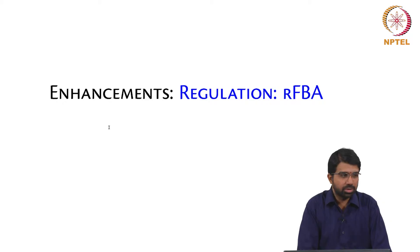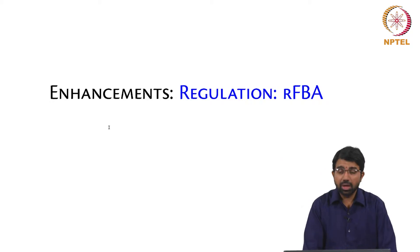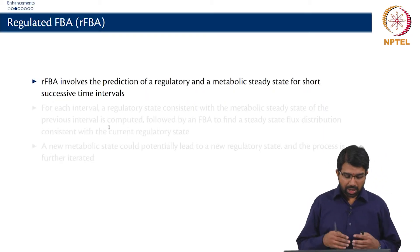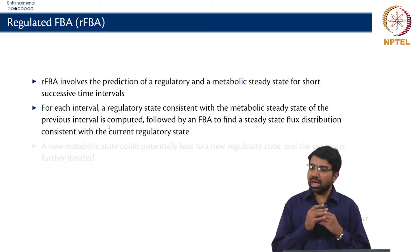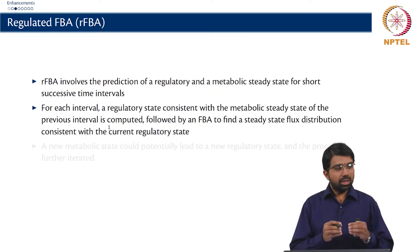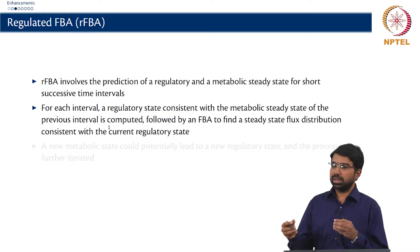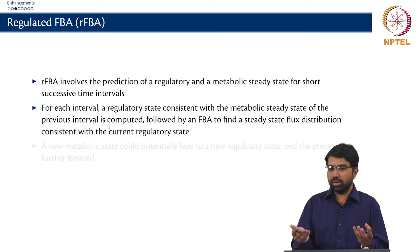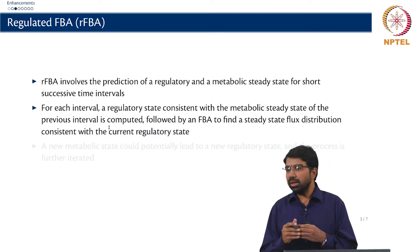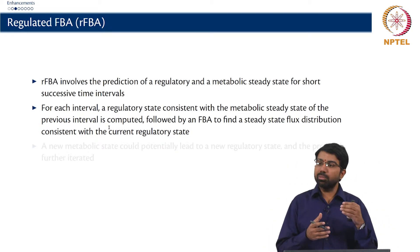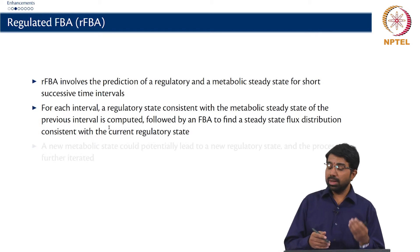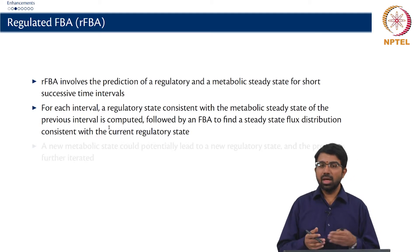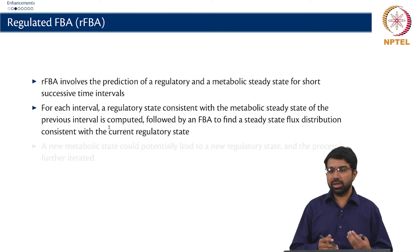Let us first look at RFBA, the classic approach. RFBA is over 15 years old and was one of the first — and quite elegant — methods proposed to handle regulatory constraints during flux balance analysis. RFBA involves the prediction of a regulatory and a metabolic state for successive time intervals. You start with a given regulatory state as the initial condition, and assuming that regulatory state, you compute a new metabolic state by running a normal flux balance analysis to get a set of fluxes.